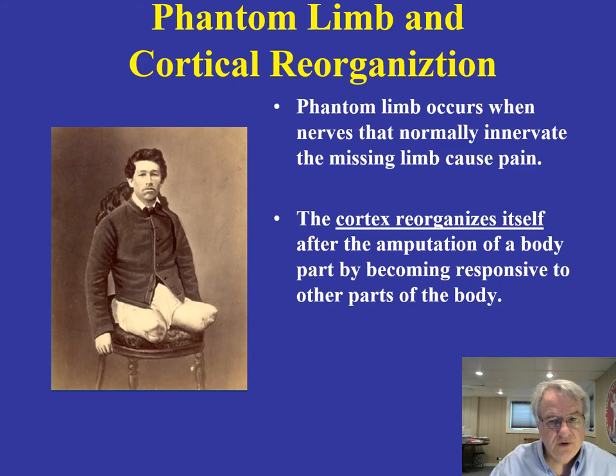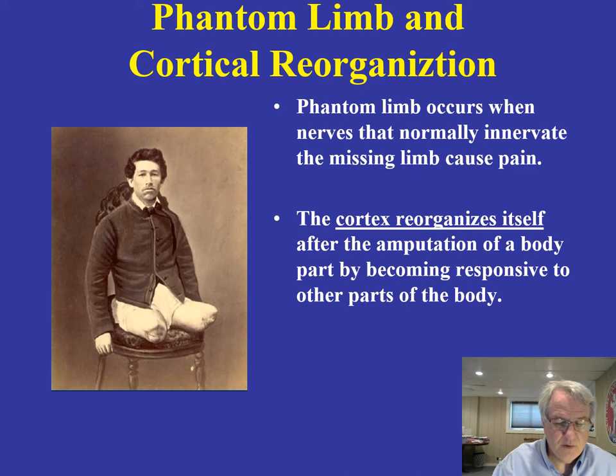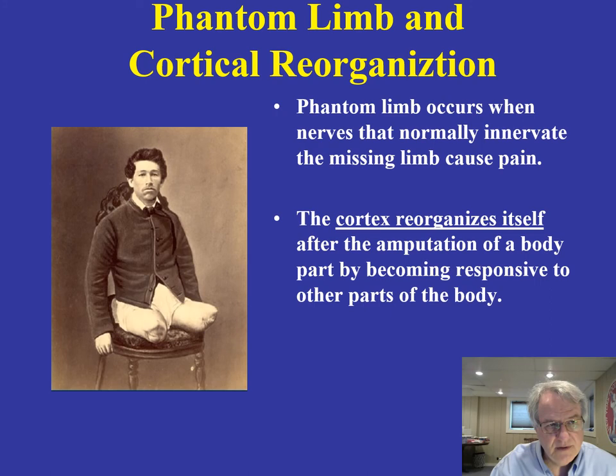Phantom limb occurs when nerves that normally innervate a missing limb begin to cause pain. One of the things we know is that the cortex is reorganizing after amputation and is becoming responsive to other parts of the body — another case of reorganization similar to what we saw with the finger amputation.